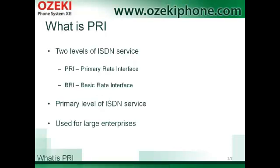So, what is PRI? Integrated Services Digital Network, or ISDN, has two levels of service. These are Basic Rate Interface, or BRI, and Primary Rate Interface, or PRI. PRI is the primary level of ISDN service. It has been designed for large enterprises.